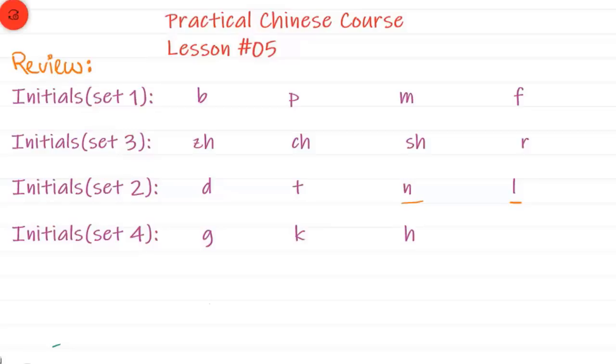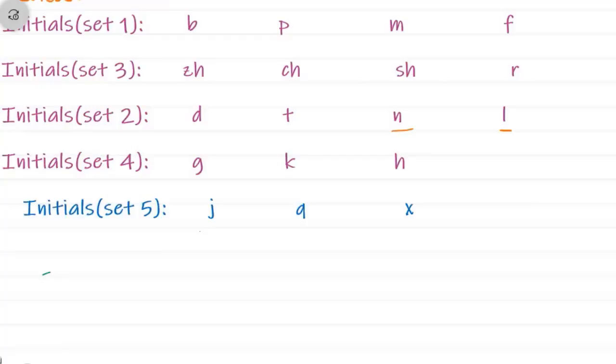Now let's move to initial set five, which is our today's lesson. For this set, we are going to pronounce this letter as j. I'm going to put the pinyin over here. Read after me: j, j.